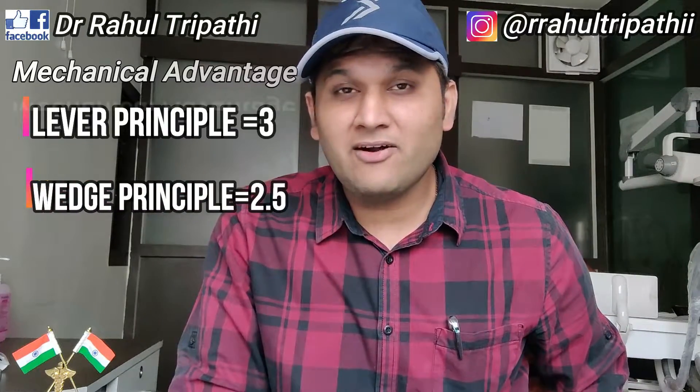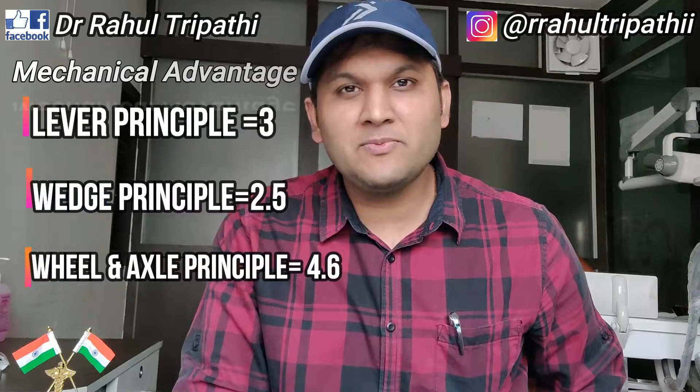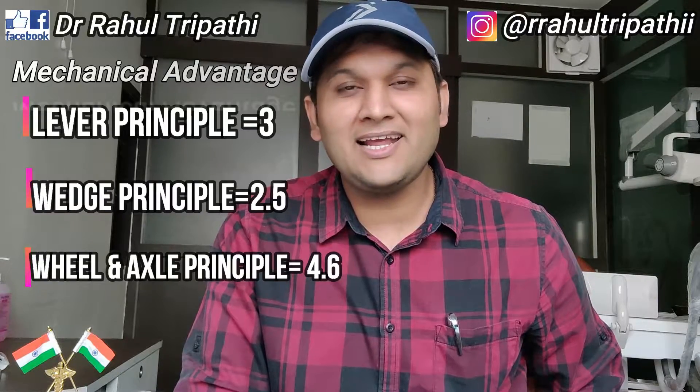All three principles have been covered. The mechanical advantages are: the lever principle has a mechanical advantage of 3, the wedge principle has a mechanical advantage of 2.5, and the wheel and axle principle has a mechanical advantage of 4.6 — or approximately 3.5. Now let's talk about which elevators follow which principles.